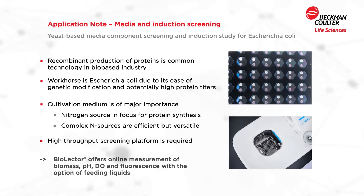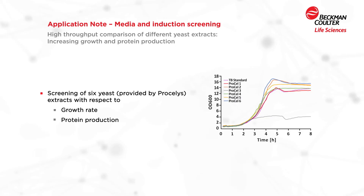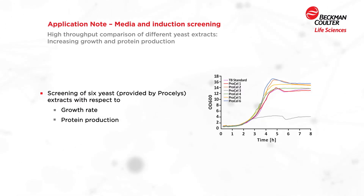The Biolector system offers online measurement of biomass, pH, dissolved oxygen, and fluorescence with the option of automated liquid feeding. Different TB media were prepared with six different yeast extracts provided by the company Preselis to evaluate the impact of these different nitrogen sources on the growth and protein production of the organism.